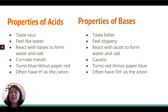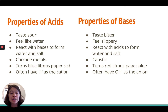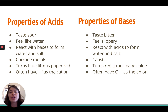Both acids and bases can react with one another. This is a special type of reaction called an acid-base reaction. When acids and bases react with one another, you can predict what the products of those reactions will be really easily. Whenever acids and bases react, you create two things: the first one is water, and the second one is salt. Water and salt are the things you produce when acids and bases react.